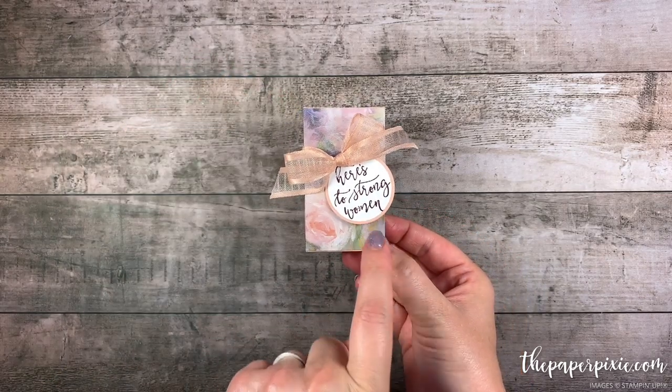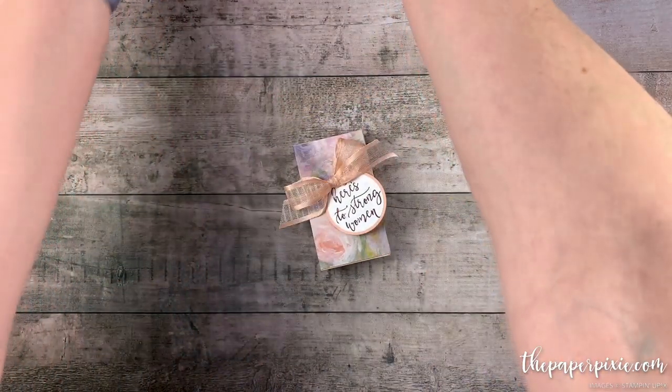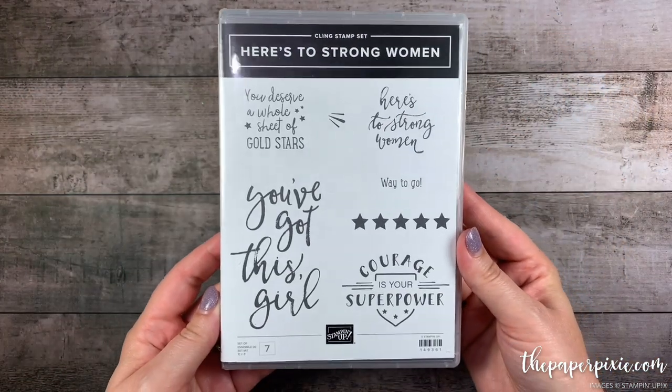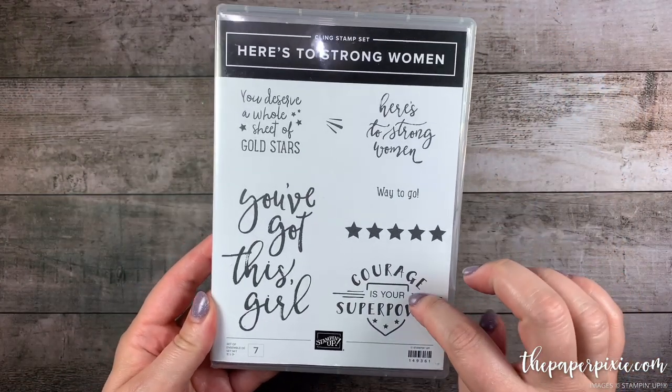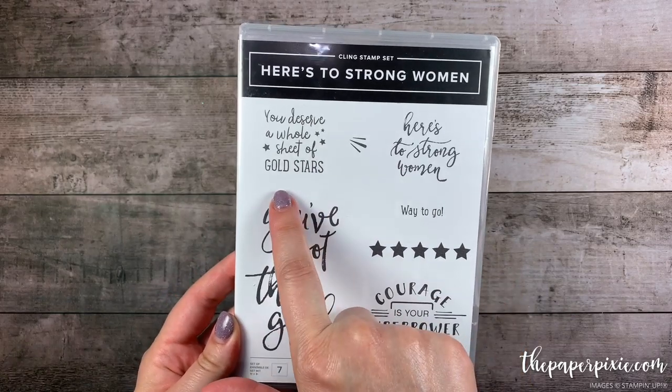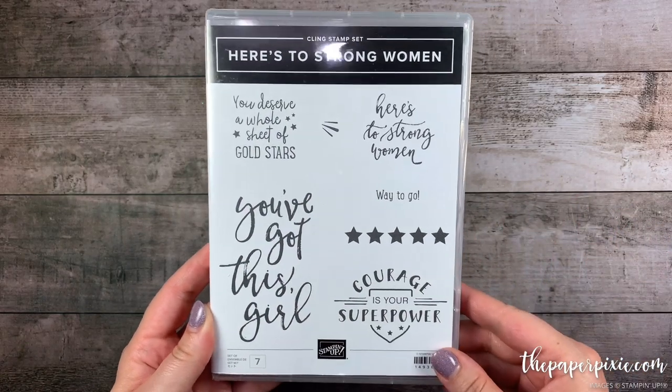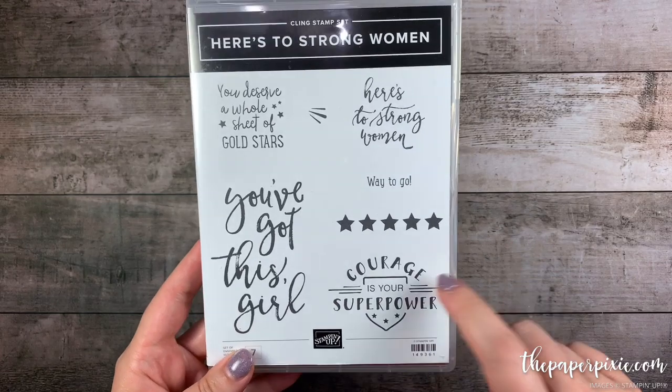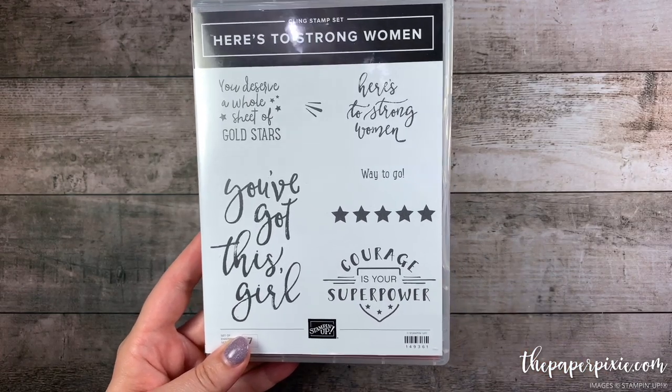Really really sweet gift to give to someone. I love this uplifting sentiment, here's to strong women. We're going to be using the stamp set, here's to strong women. I love this set. I especially love this sentiment for teachers. But it's wonderful to lift women up and I think we should do more of it. So let me show you how easy it is to make this box.